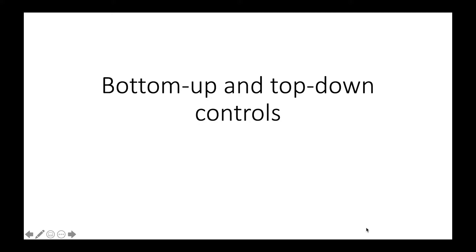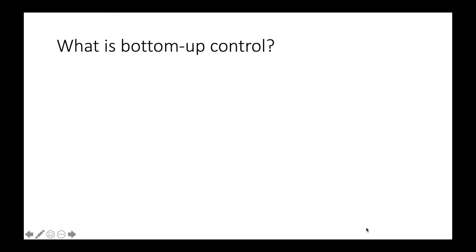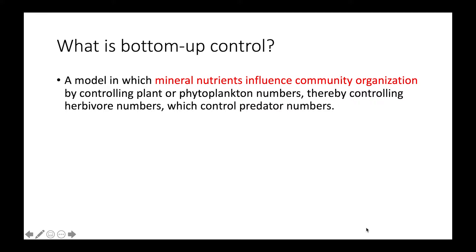This video is about bottom-up and top-down controls. Bottom-up control is a model in which mineral nutrients influence the organization of a community by controlling plant and phytoplankton numbers. Based on the amount of plants and phytoplankton, that controls the number of herbivores, which in turn controls the number of predators. Basically, bottom-up control suggests it all starts at the bottom of the food chain — the bottom of the trophic pyramid — with the amount of minerals available in an environment.